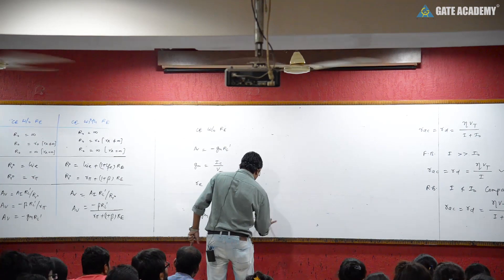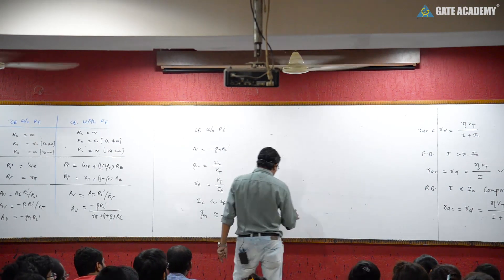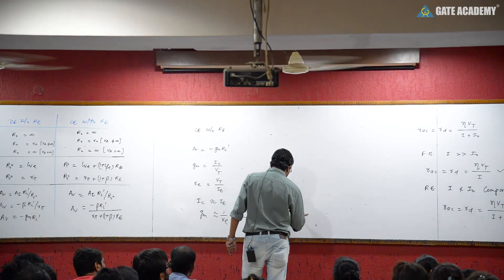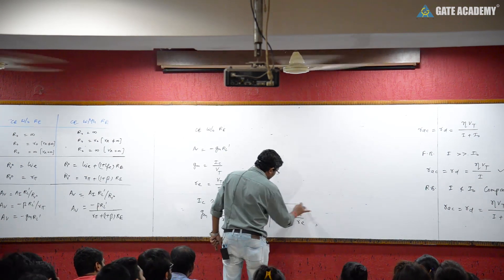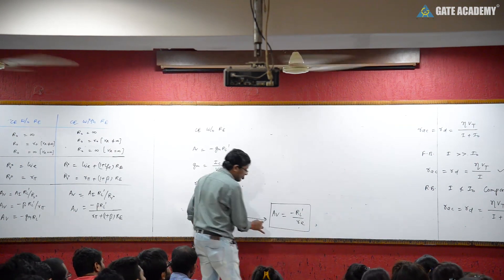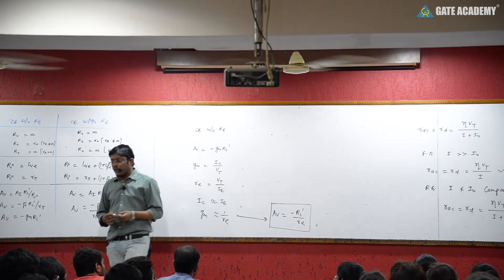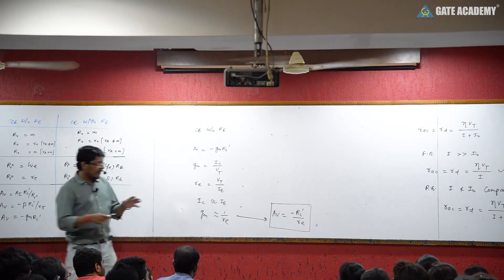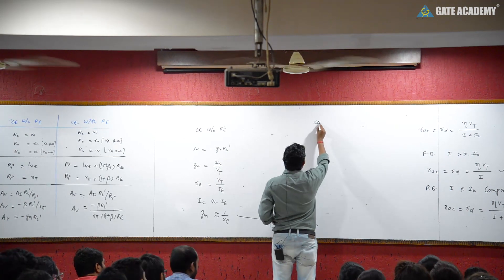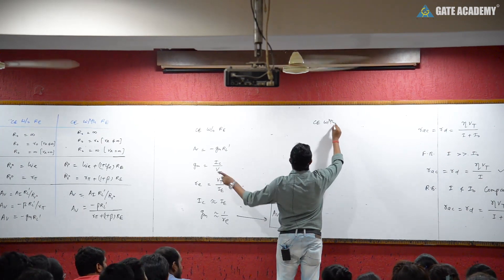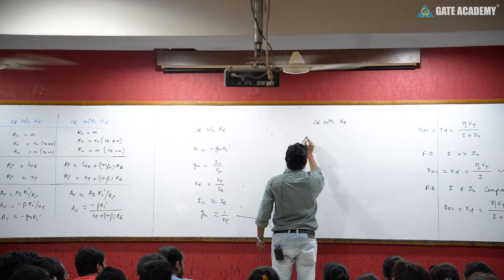So the voltage gain A_V was minus G_M times R_Ld. Substituting, this simplifies to minus R_Ld upon r_e. Now for common emitter with R_E, the voltage gain expression changes.